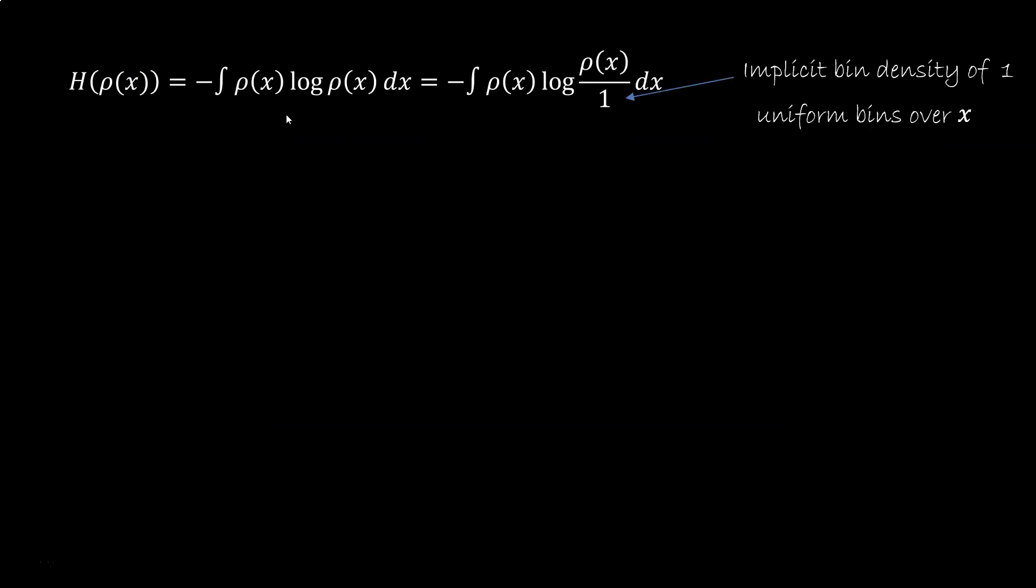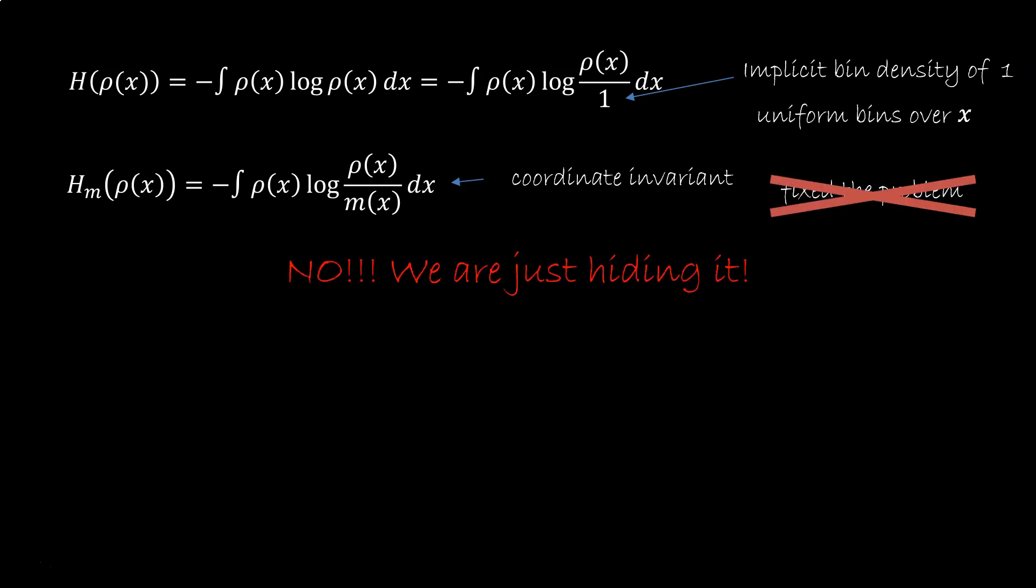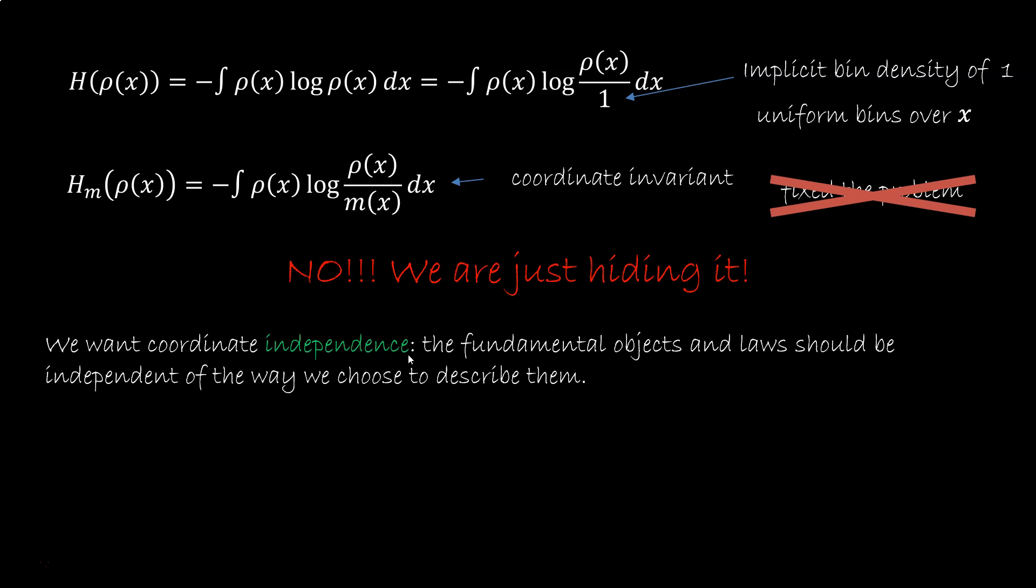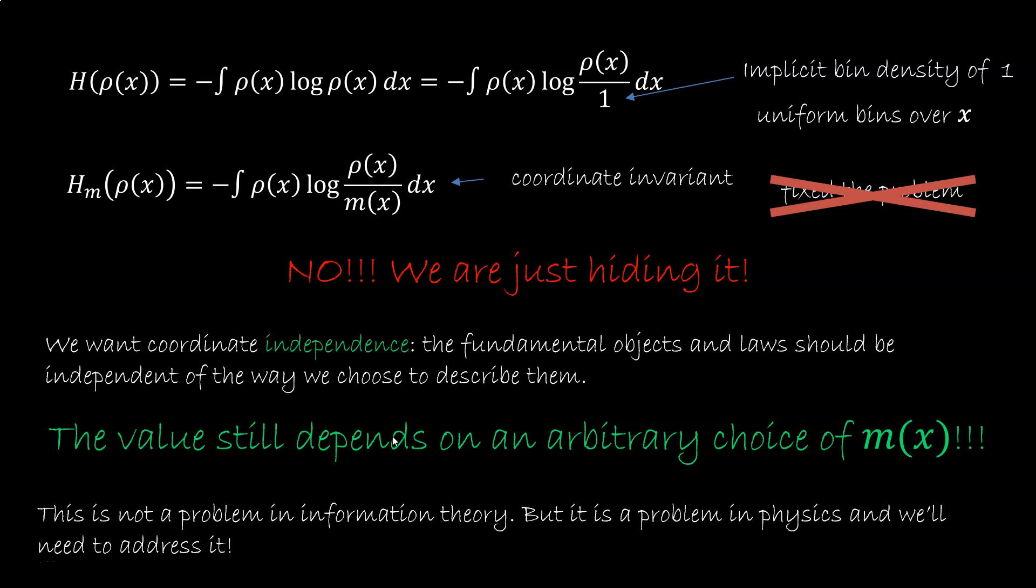This makes sense because now we are using the same binning identified by m in both cases. The Shannon entropy, then, is a special case where we implicitly have a bin density of 1. Uniform bins over x and a unit of x is our comparison. The more general expression forces you to specify the binning through m and is coordinate invariant. So we fixed the problem. We have a coordinate invariant expression for entropy. Actually, no, we haven't fixed coordinate invariance. We are just hiding it, or making it explicit, depending on the way you look at it. The idea of coordinate independence in physics is that the fundamental objects and laws should be independent of the way we choose to describe them. Here, the value depends on the bin density m of x, so it's not at all independent on the way we choose to describe it. This is not a problem for information theory, by the way, and it may not be a problem for other branches of science as well. But it is a problem in physics, and we need to address it head on.